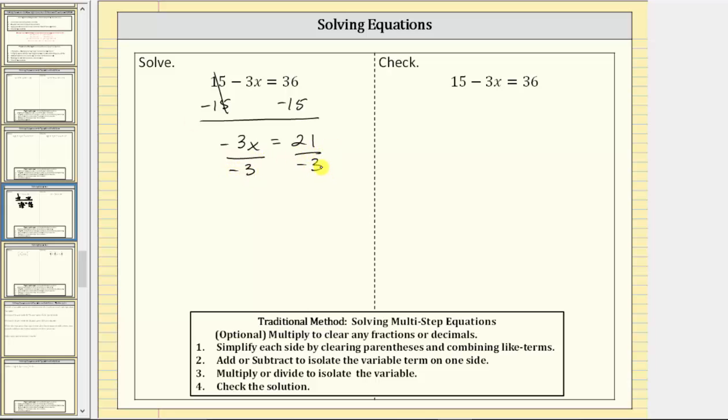And now we simplify. Negative three divided by negative three equals one. One times x is x. We have x equals 21 divided by negative three, which equals negative seven. And once again, this is an equivalent equation to the given equation, except now the equation is solved for x. Therefore, it gives us the solution to the equation. Our solution is x equals negative seven.